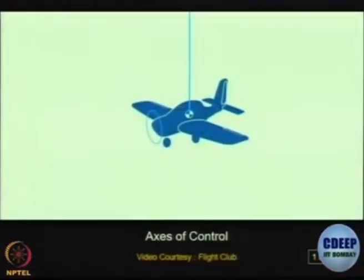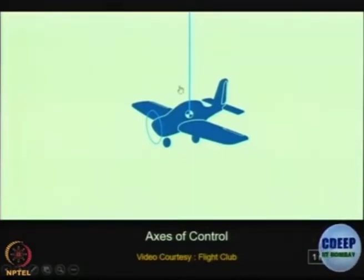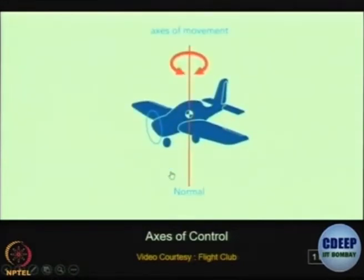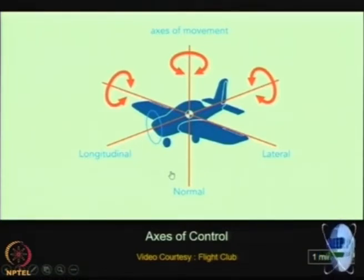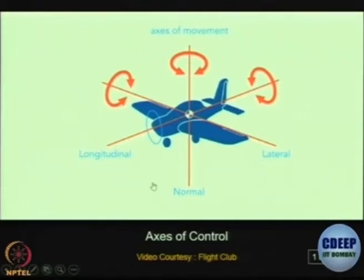Before we start, it is important for you to understand that we follow a particular axis system when we talk about aircraft. Each of the three axes moves about the centre of gravity. The aircraft's principal axes are the normal axis drawn from top to bottom, the lateral axis drawn parallel to the wings, and the longitudinal axis drawn from tail to nose. Each axis is perpendicular to the other two.